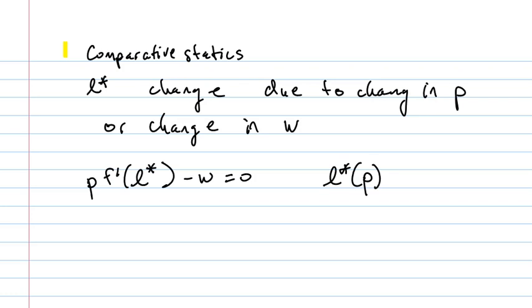And let's say if it were an explicit function, we would know to do the following: P F prime of L star of P minus W equals zero. So I can now differentiate this equation with respect to P.